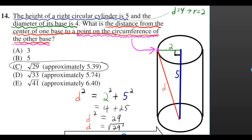Which means you end up getting a right triangle, which you can solve for the distance I labeled d. So d squared is equal to 2 squared plus 5 squared, which is equal to 4 plus 25, which is equal to 29. So if d squared is equal to 29, then d is equal to the square root of 29.